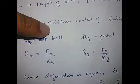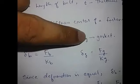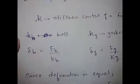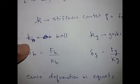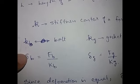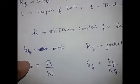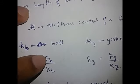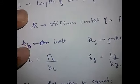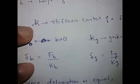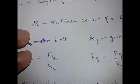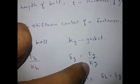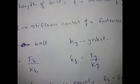KB is the stiffness of the bolt. F is equal to KX, where KX is the deformation area. F equals KX; the deformation area is equal to KG.